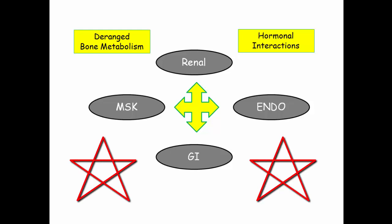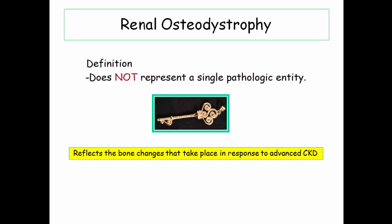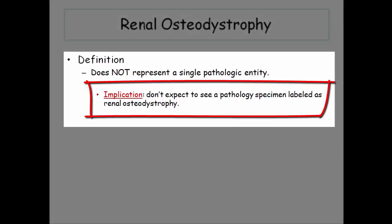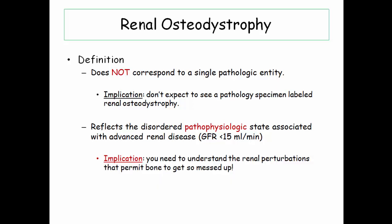Let's start with a working definition that highlights what this condition is not. Renal osteodystrophy does not represent a single pathologic entity. Rather, it reflects the bone changes that take place in response to chronic kidney disease. Don't expect to see a pathology specimen labeled as renal osteodystrophy. It reflects the disordered pathophysiologic state associated with advanced renal disease, so you need to understand the renal perturbations that permit bone to get so messed up.